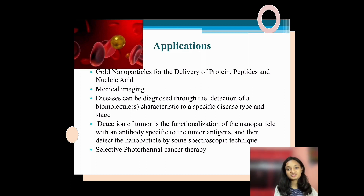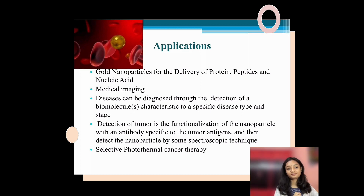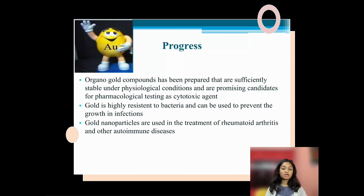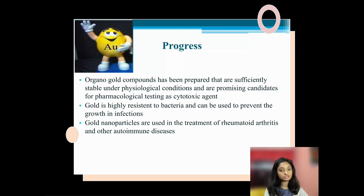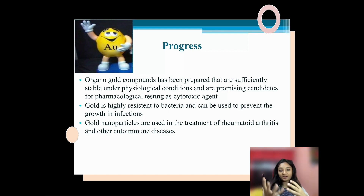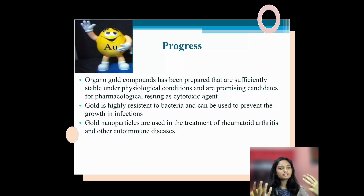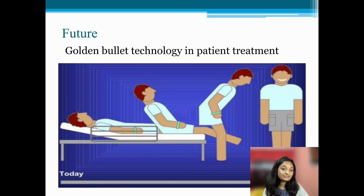Applications also include the detection of tumors through functionalization of nanoparticles with antibodies specific to tumor antigens, detected by spectroscopic techniques, and selective photothermal cancer therapy. In terms of progress today, organogold compounds have been prepared that are sufficiently stable under physiological conditions and are promising candidates for pharmacological testing as cytotoxic agents. Gold is also highly resistant to bacteria and can prevent growth and infections. Gold nanoparticles are used as therapeutic agents in treatments of rheumatoid arthritis, psoriatic arthritis, and other autoimmune diseases.